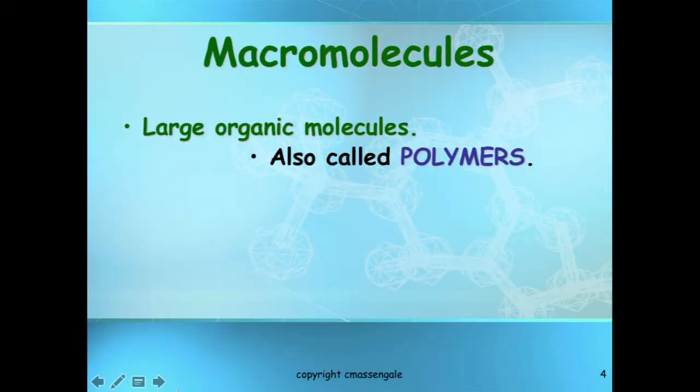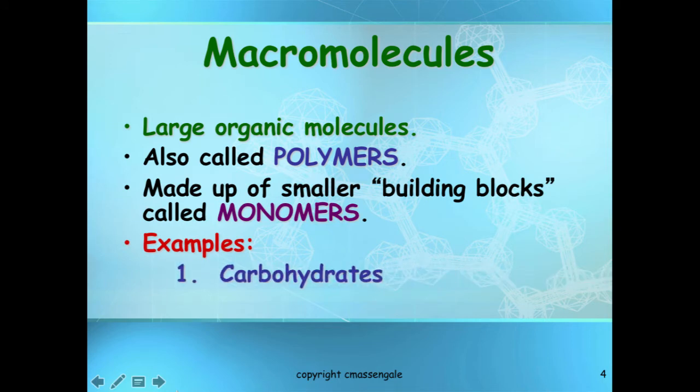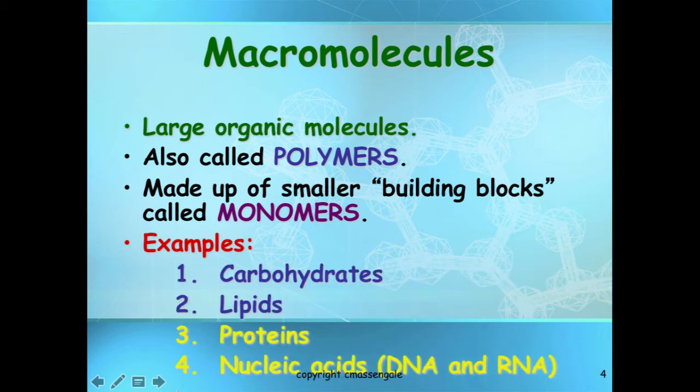When we talk about macromolecules, macro means large, so we're talking about large organic molecules. These are also called polymers. The prefix poly in Latin means many. So when we talk about macromolecules or a polymer, we have to talk about what makes up these large molecules — why are they so big? The answer is a monomer. The prefix mono means one in Latin. It is one unit — the building block of what makes up these polymers.